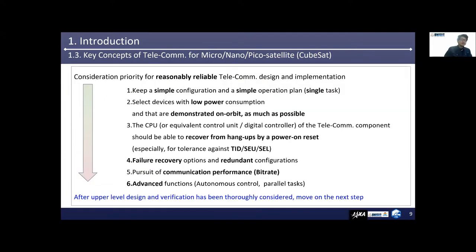This view graph shows the consideration policy for a reasonably reliable telecommunication design and implementation. This ordering is based on my project experience, named Hodoyoshi — meaning 'just good' in Japanese — proposed by Professor Nakasuka of the University of Tokyo since 2010. Level 1 is to keep a simple configuration and simple operation plan, like single task. Even if you suddenly start to consider a complex system architecture including advanced functions and backup systems, critical points that really need to be discussed carefully will be hard to find. Please start by considering a simple configuration to realize the minimum system to achieve what you want to do.